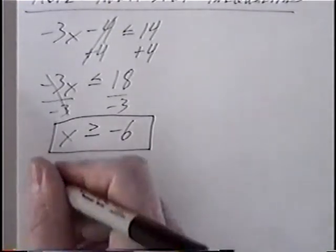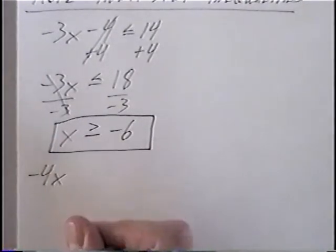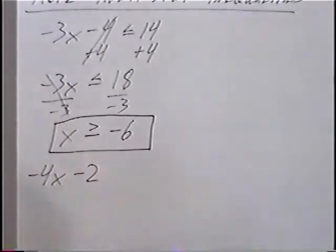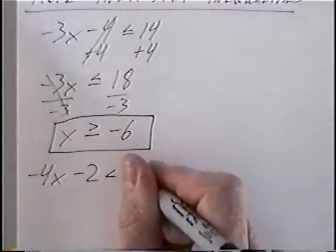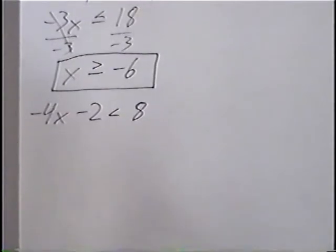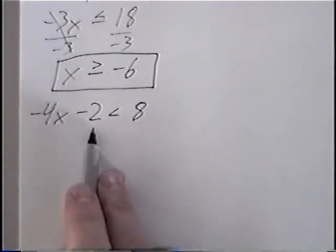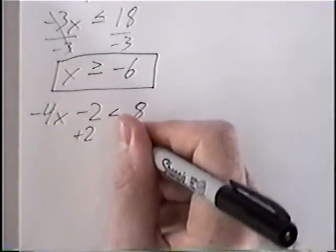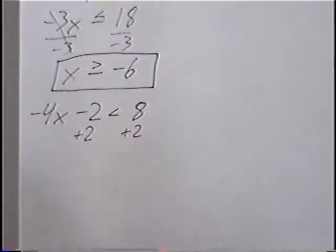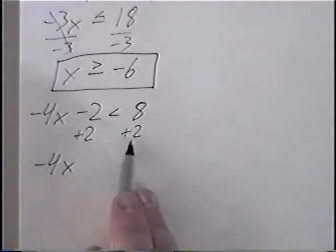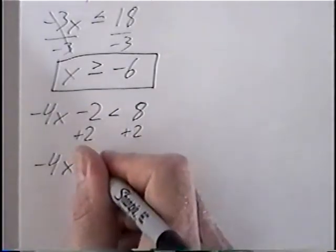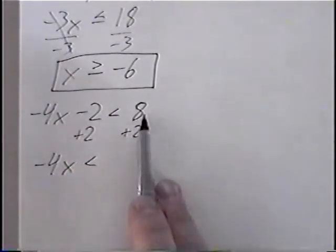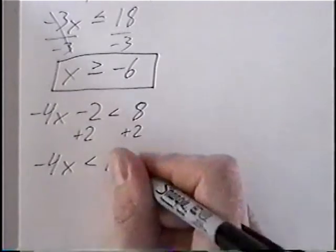The last question for this section: negative 4x minus 2 less than 8. The first step to get x by itself would be to get rid of the minus 2, which we can do by adding 2 to both sides. Negative 4x would come down. Again, if you add or subtract a number, the inequality would stay the same. 8 plus 2 would be 10.